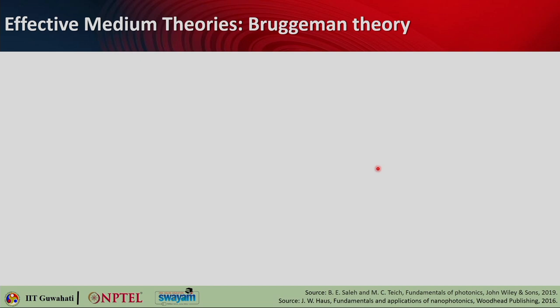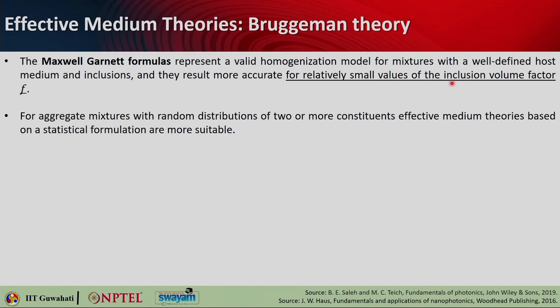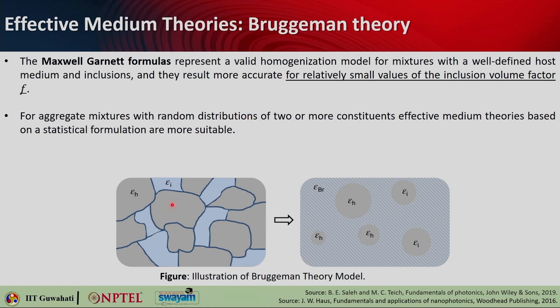The next important and popular theory is Bruggeman's theory. Maxwell-Garnett formula represents a valid homogenization model for mixtures with a well-defined host medium and inclusions, and gives more accurate results for small values of the inclusion volume fraction f. However, there could be aggregate mixtures with random distribution of two or more constituent materials, and in those cases the effective medium theories should be based on some statistical formulation.